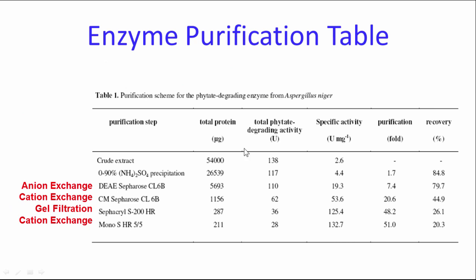Here's another purification table, this one for a phthalate-degrading enzyme. The columns show crude extract total protein, total phthalate-degrading activity in units, specific activity, purification fold, and recovery. Ammonium sulfate fractionation from 0–90% precipitated out the activity with good recovery but only about doubled the specific activity. Then DEAE cellulose, followed by CM cellulose — a cation exchange technique — improved purity. Sephacryl S200 high resolution gel filtration worked well, and finally Mono S — a very negatively charged sulfonate cation exchanger — also worked well, yielding a final pure protein.